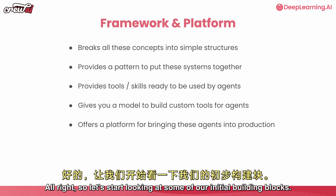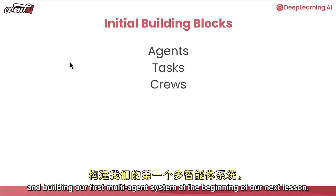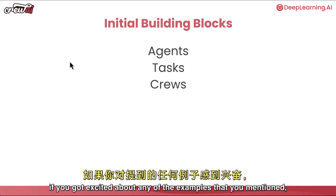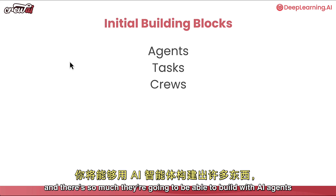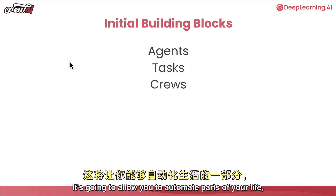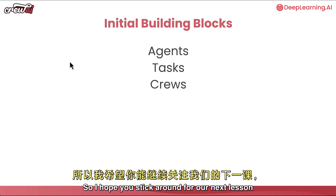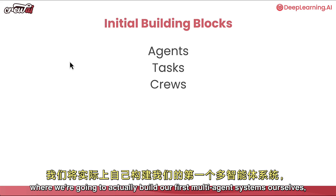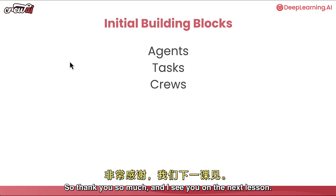We're going to be looking at our initial building blocks: agents, tasks, and crews. We'll be diving into those and building our first multi-agent system at the beginning of the next lesson. If you're excited about any of the examples mentioned, stick around - things are only going to get more interesting from here. There's so much you're going to be able to build with AI agents. By the end of this course it's going to allow you to automate parts of your life and your job. See you in the next lesson.